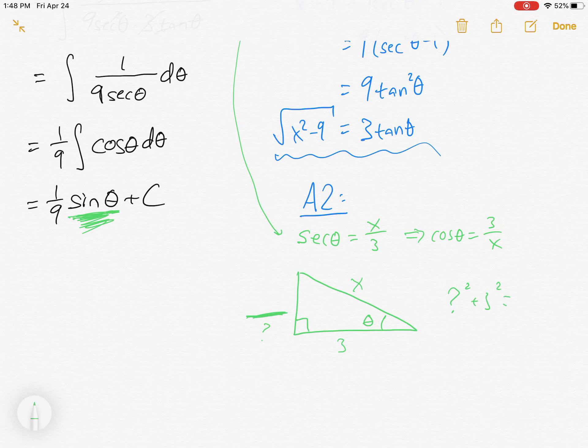So now the question is what is sine of theta? Well, sine of theta is opposite, whatever that is, over hypotenuse. So I need to find the opposite side. I need to do the Pythagorean theorem. Let's just call this question mark. So the question mark squared plus 3 squared equals x squared. That's going to be x squared minus 9, which is familiar. That was from the very beginning, it's going to come back again. This is x squared minus 9. That becomes square root of x squared minus 9.